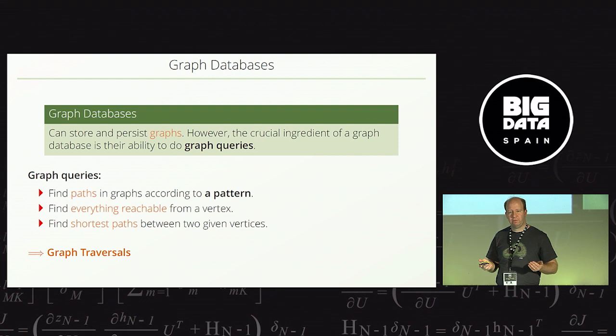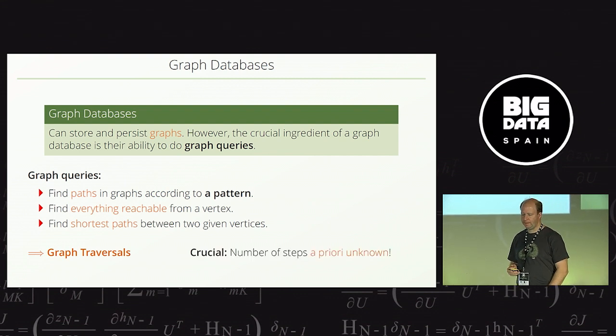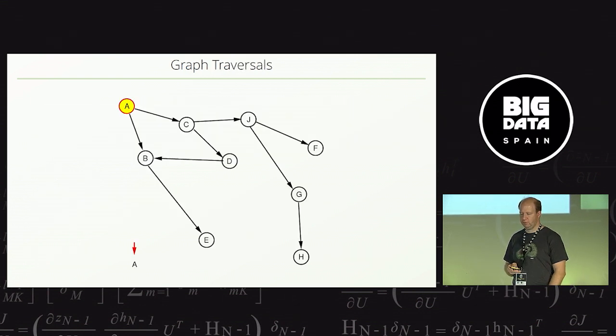And so, the question comes, how does a graph database do this? And I would like to explain the essential idea behind the execution of such queries. And that is graph traversals. And I can only reiterate, the crucial thing here is that we don't know beforehand how many steps we have to do.